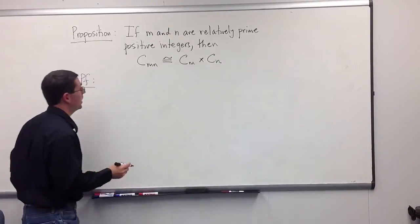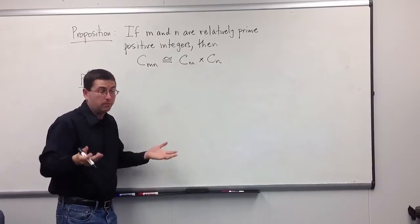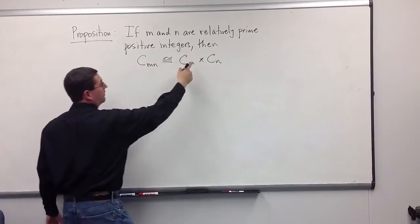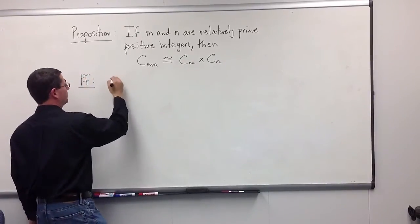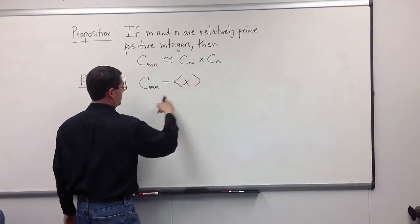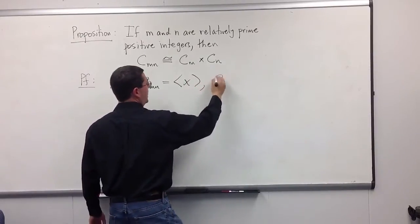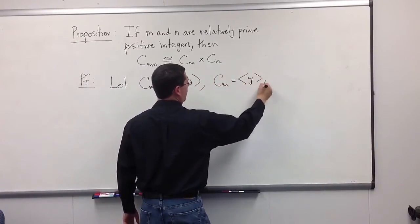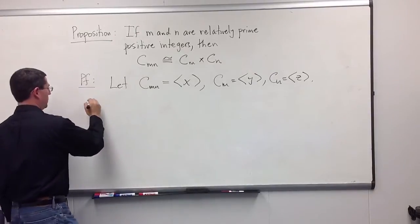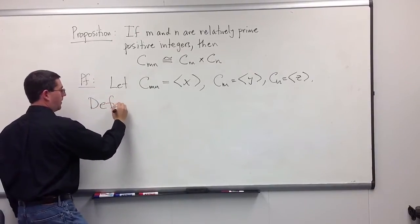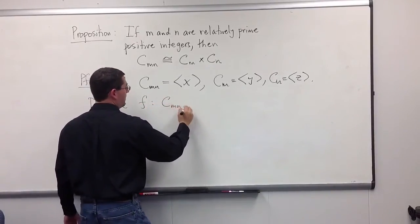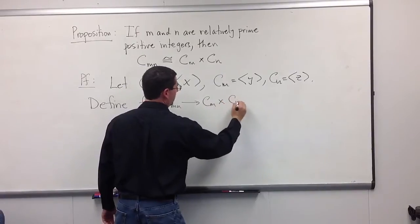Alright, so let's get to the proof. If we want to show an isomorphism between two groups, we can simply create a map which is an isomorphism. First, let's give some names to the generators of these three groups. We'll let C_mn be generated by an element x which has order mn. C_m can be generated by y, and C_n can be generated by z.